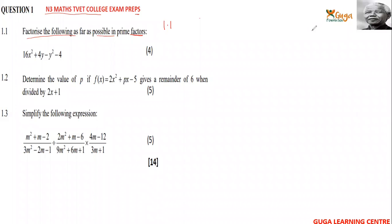Question 1.2: determine the value of p if f(x) = x² + px − 5 gives a remainder of 6 when divided by 2x minus 1.